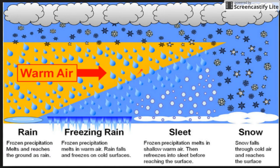And then we have sleet, where there is a very shallow layer of warm air which melts the snowflake into a raindrop, but then there's a really deep layer of cold air on the surface, and they have time to refreeze and drop as little pellets.